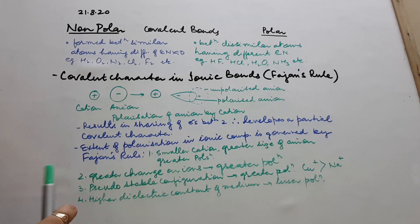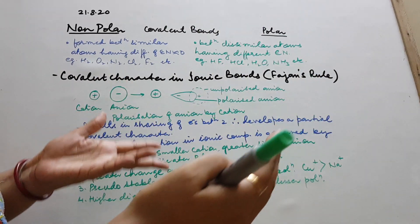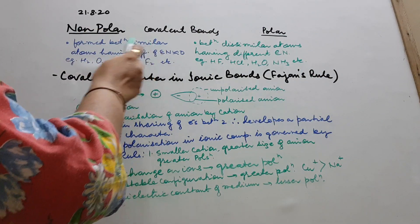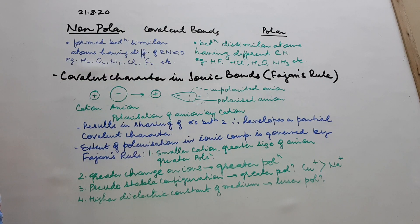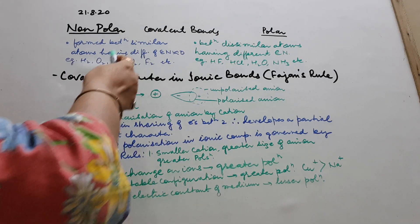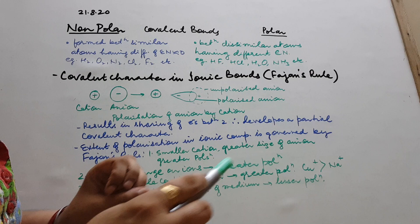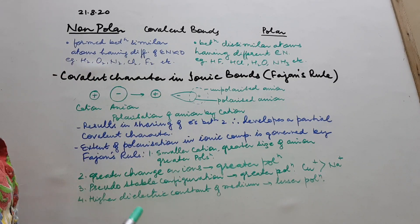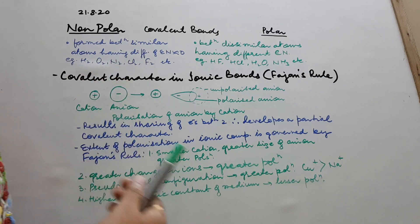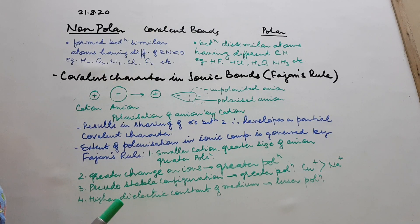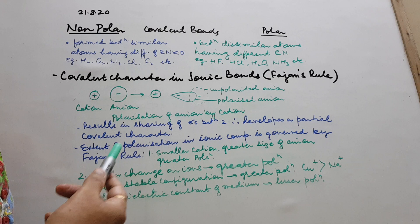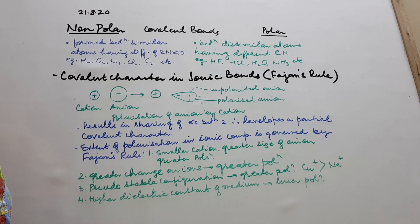What are non-polar covalent bonds? Non-polar means no polarity, as the name indicates. This type of bond is formed between similar atoms — ideally the same atoms — having a difference of electronegativity (En) of nearly zero, or as low as possible. Examples: H₂, O₂, N₂. These are ideal examples of non-polar covalent bonds because the bond is formed between like atoms, so the difference in electronegativity is zero — they are totally non-polar.